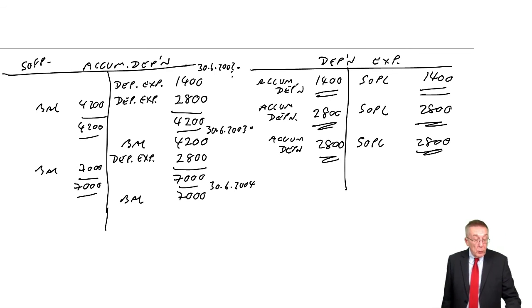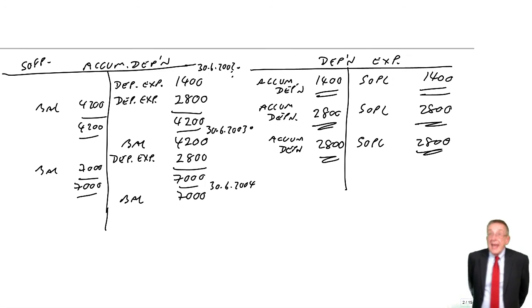There is only that one entry. Calculating we've done before, straight line or reducing balance. But whichever way we're using, once we've got the figure, the entry is always the same. Debit the expense account, credit the accumulated depreciation.